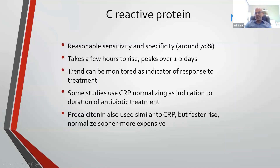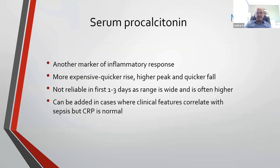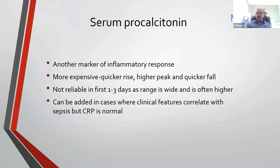Procalcitonin is used similar to CRP, but it has a faster rise and normalizes sooner. It is an expensive test. If you have a baby with a strong suggestion of infection but don't want to give antibiotics, you can do a procalcitonin after a few hours instead of waiting 12 to 24 hours for the CRP. However, PCT in the first three days is not reliable because the range is very wide — it can go up to 15 to 20. Try to avoid doing it in the first 48 hours.